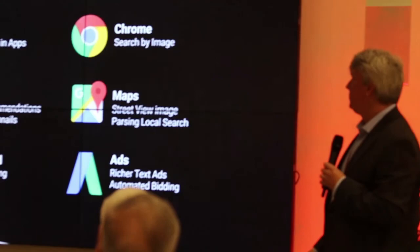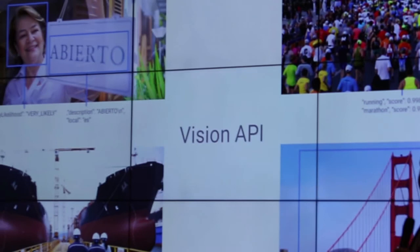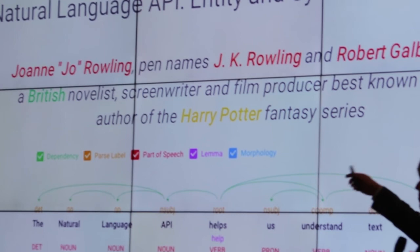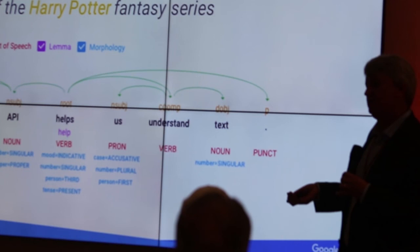So the offerings that Google has, we have a Vision API, super straightforward. You send us an image, we tell you what's in it. We have natural language processing. Given the text, given this Harry Potter fragment, we can tell you what the nouns are, what the verbs are, what modifies what. We can parse that text, understand the content of it, and provide you a model that indicates what information is in that text.